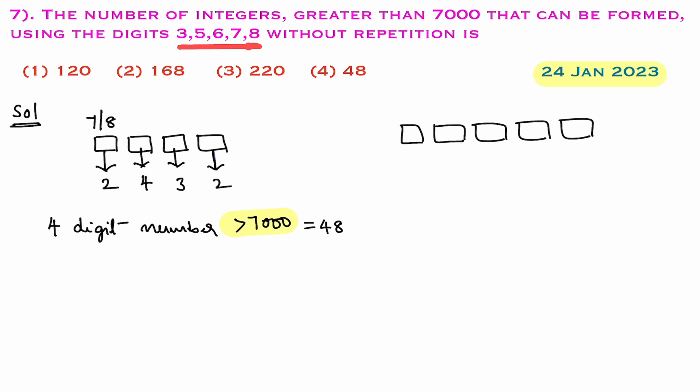Now, as they given five digits here, without repetition they are saying we can form a five-digit number also. And one more thing, we cannot form a six-digit number from these five digits. If we form a six-digit number, one digit will repeat. So here you need to understand that as they given five digits, we can form a five-digit number which are greater than 7000. Any five-digit number formed using these digits is 100% greater than 7000.